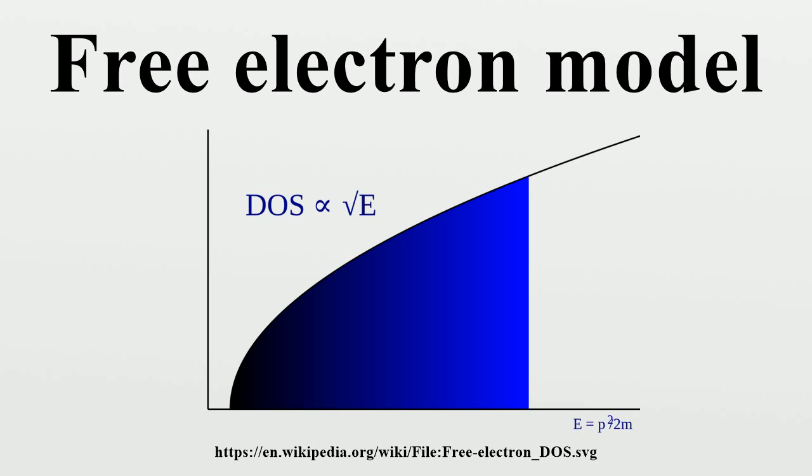The Fermi wave vector is given by a formula where N is the total number of electrons in the system and V is the total volume. The Fermi energy EF is then expressed accordingly. In a nearly free electron model of a valent metal, one can replace N with the total number of metal ions.